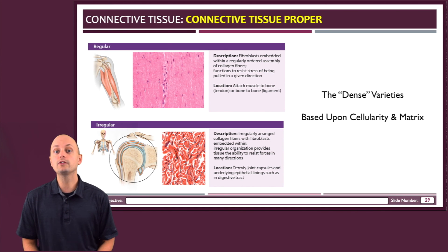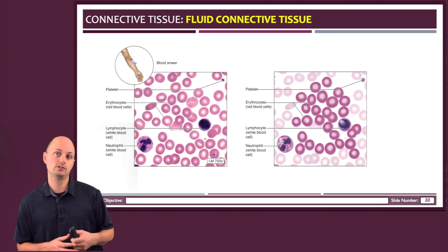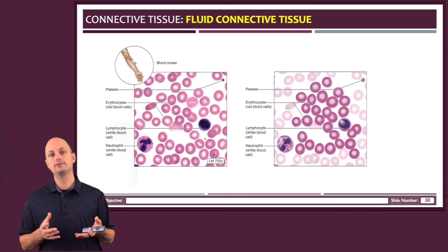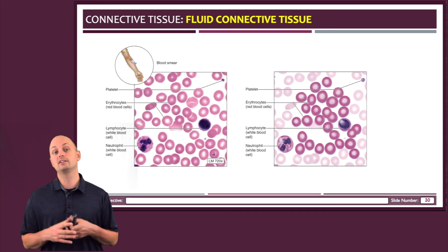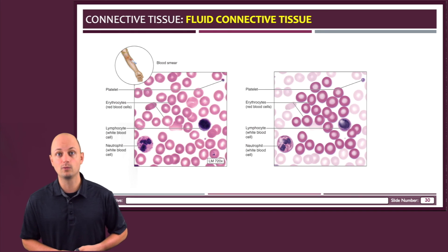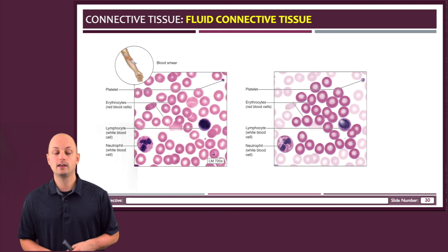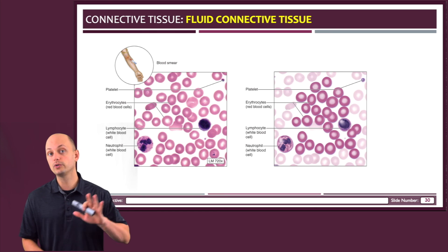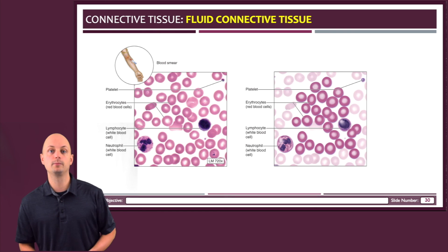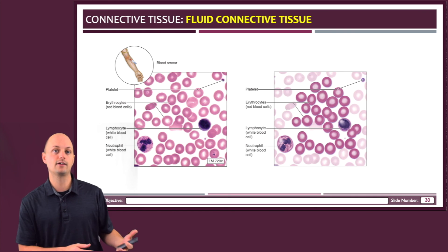The only fluid connective tissue is blood, which is classified that way because its matrix is actually about 45 percent water, and we have a whole unit coming up on blood in the next half of the course.